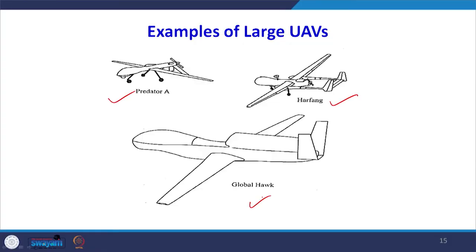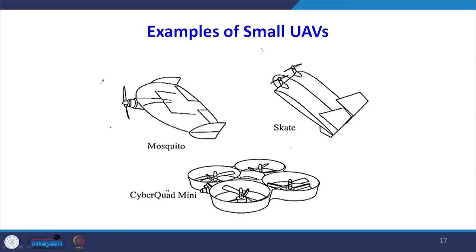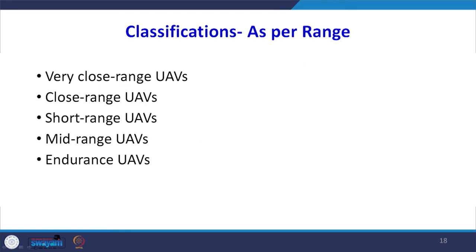This is the classification done according to range. Looking at large UAVs, we have the Predator, Harfang, and Global Hawk, used for army and defense purposes. Examples of medium UAVs include Pioneer, Hunter Drone, Fire Scout, Eagle Eye, Sky Eye, and Watch Keeper — these are not used just for small mapping. There are also small UAVs with names like Mosquito, Skate, and Cyberquad Mini.